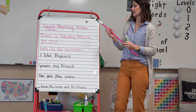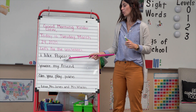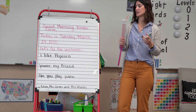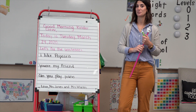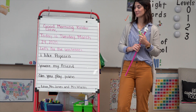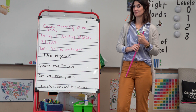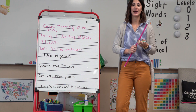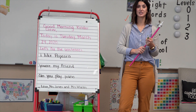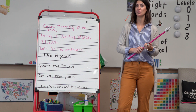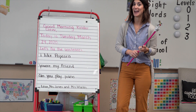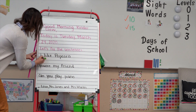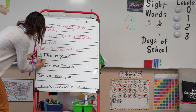So this first sentence says: I like popcorn. Before I fix anything, I want you to think about what you notice that needs to be changed. So the first place I'm going to look is at the beginning of my sentence. Who remembers — when we are starting our sentences, what type of letter do we need to use? It needs to be a capital letter.